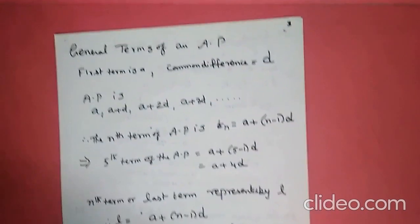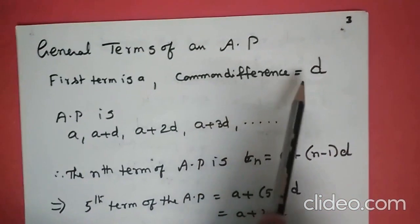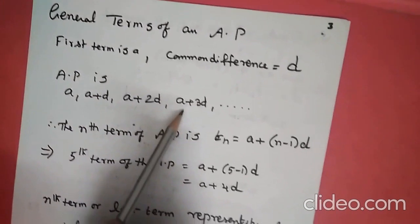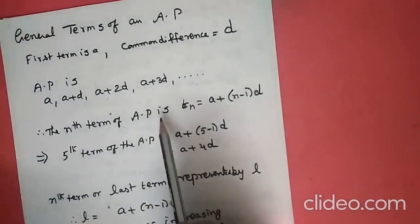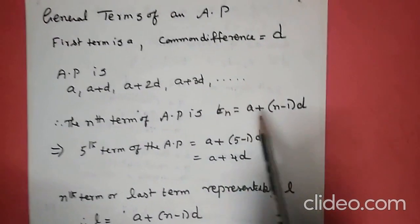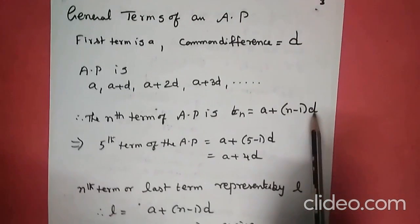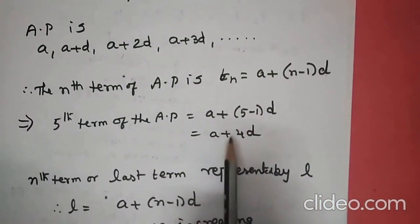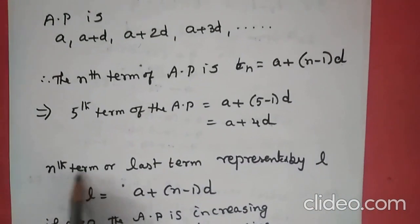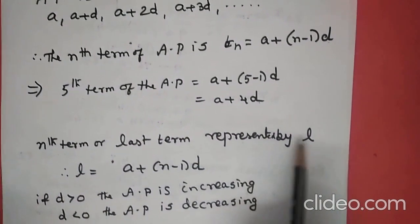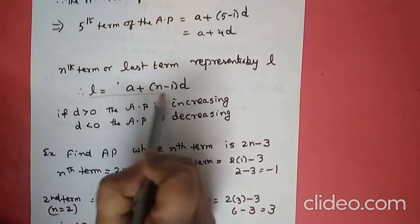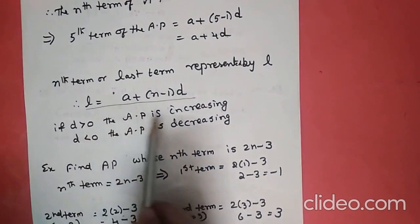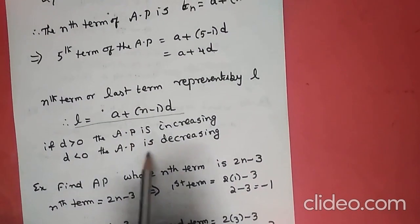What is the general term of AP? The first term is A, common difference is D. Therefore the general term of AP is: A, A+D, A+2D, A+3D, etc. The nth term of AP is TN = A + (N-1) × D. For example, the fifth term equals A + (5-1) × D = A + 4D. The last term, the nth term, is represented by L. Therefore L = A + (N-1) × D. If D is greater than 0, AP is increasing; if D is less than 0, AP is decreasing.